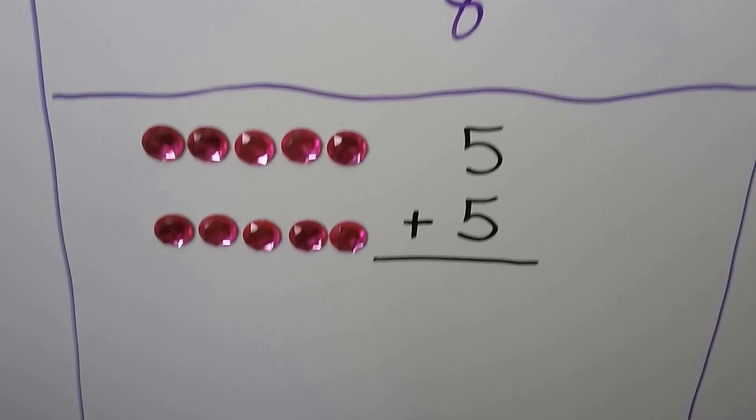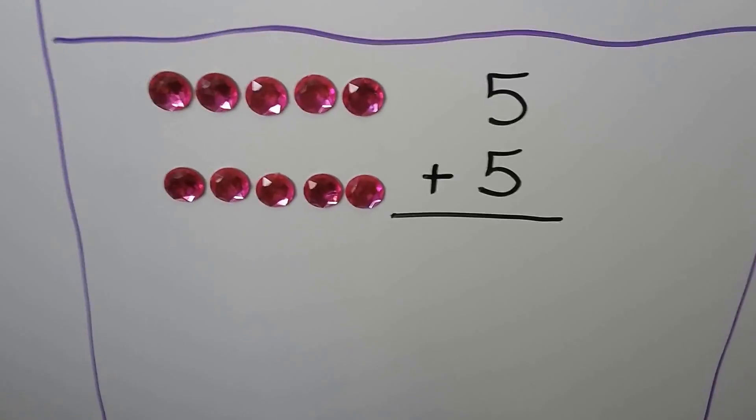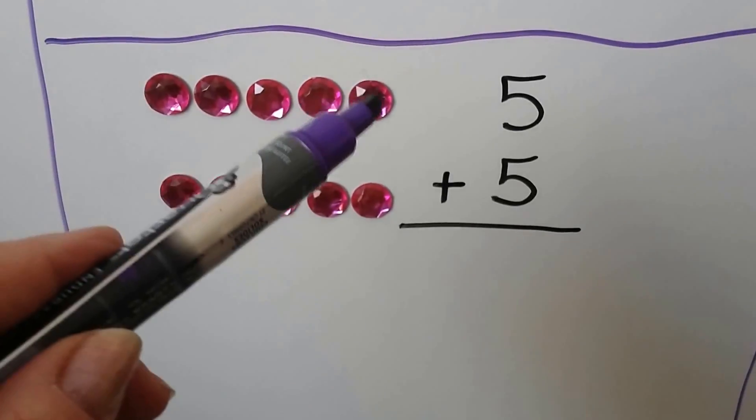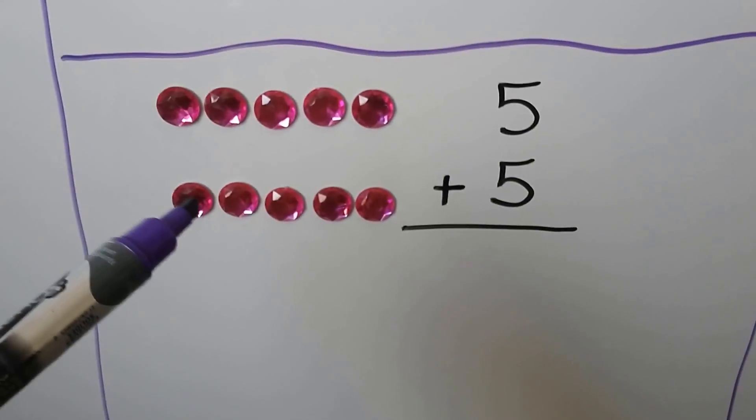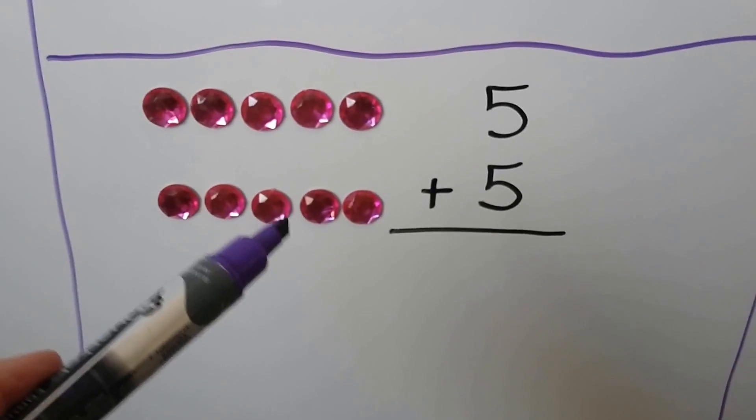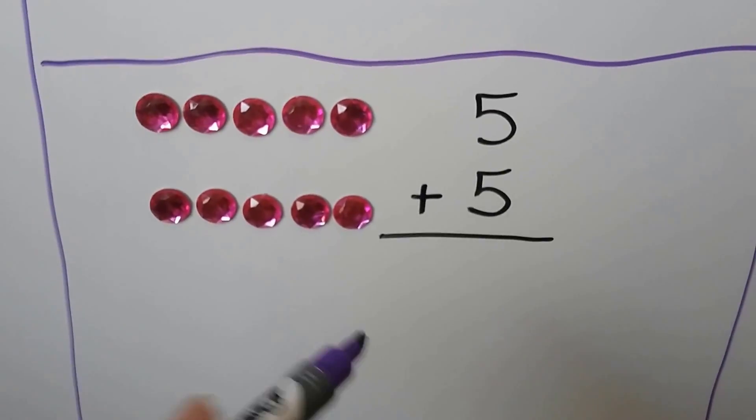We can count on from the 5: 6, 7, 8, 9, 10. So 5 plus 5 is equal to 10.